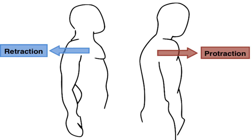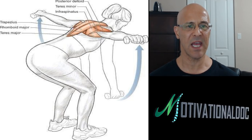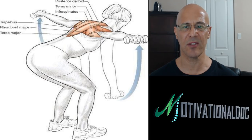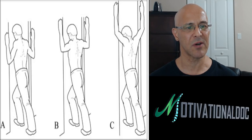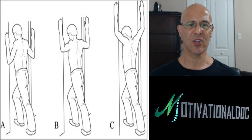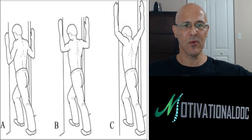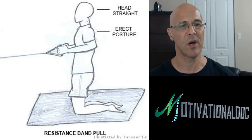Pronation means shoulders rounding forward; retraction uses the rhomboids to bring them back. Here's a great exercise: using a can of beans or light weight, arch the back slightly and bring the arms up — excellent for the rhomboids. Do eight to twelve repetitions, two to three sets daily. You also need to stretch the pecs — stretch the pecs, strengthen the rhomboids — working different angles to target different fibers of the pectoralis major and minor.